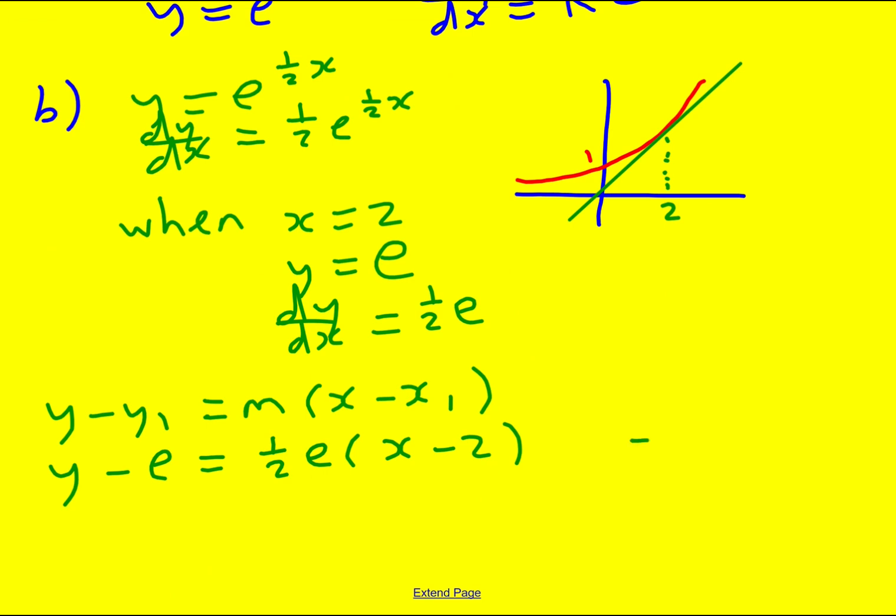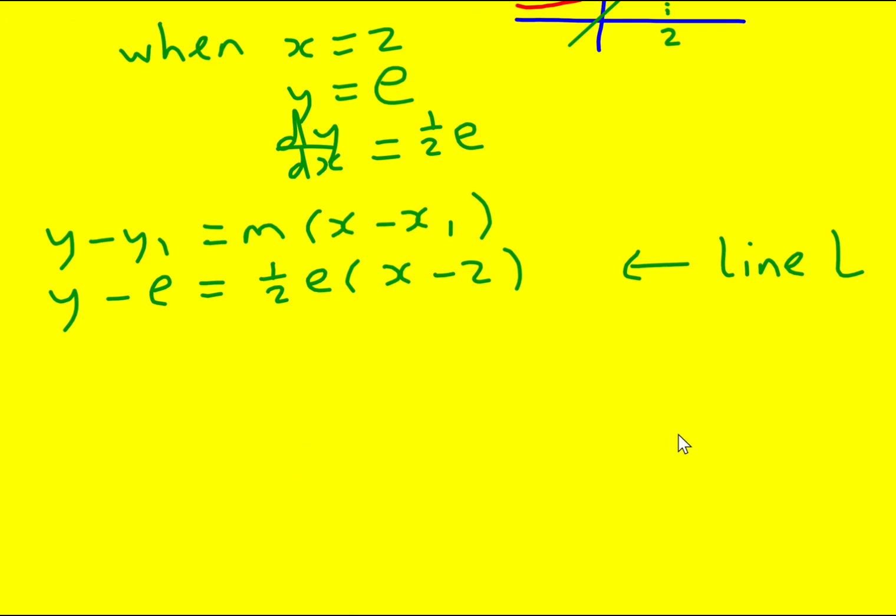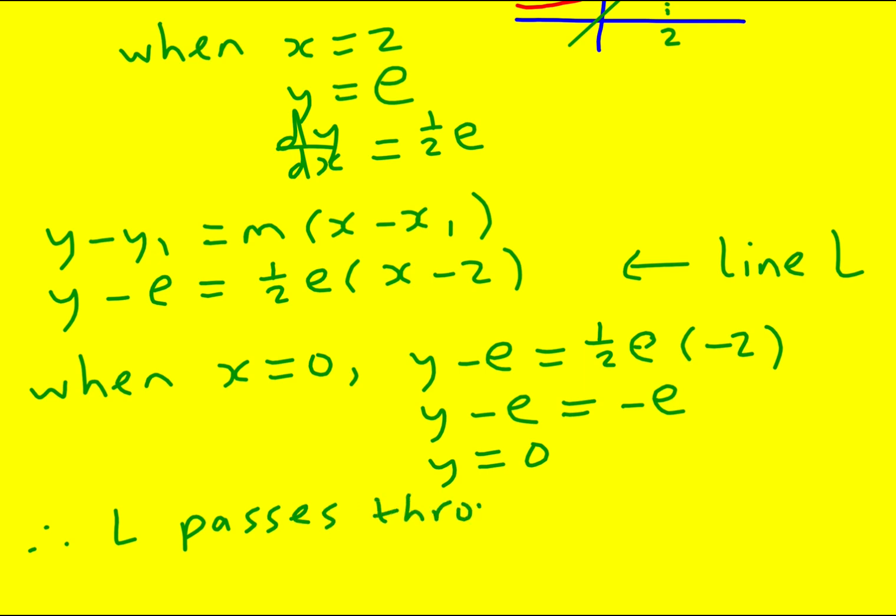I just need to work out the value of y when x equals 0. This is line L. So when x equals 0, y minus e equals a half e times minus 2. y minus e equals minus e, so y equals 0. We can see, therefore, L passes through (0, 0). Brilliant.